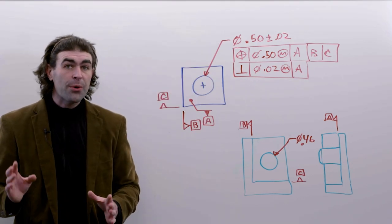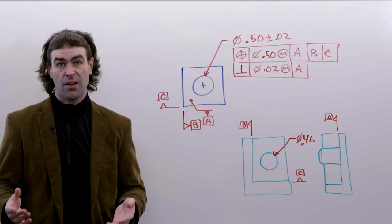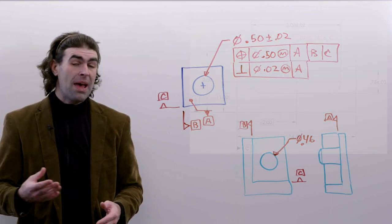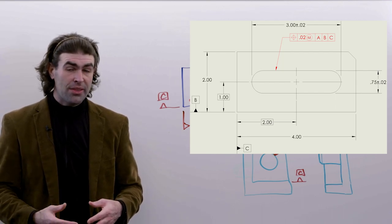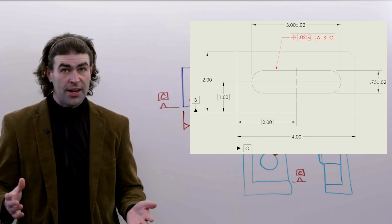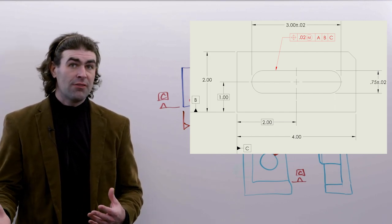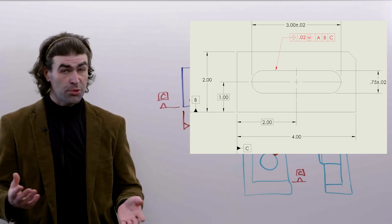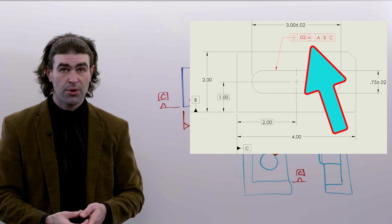Another situation where you must use the surface method is with a slotted hole or an elongated hole. The math standard doesn't give any support for the axis method with a slotted or elongated hole. It only shows surface method. The Y14-5 only shows and explains how to do a slotted or elongated hole with the MMC principle.